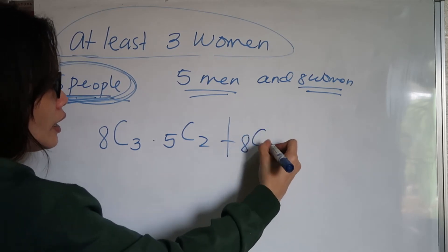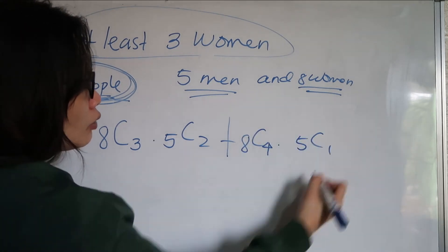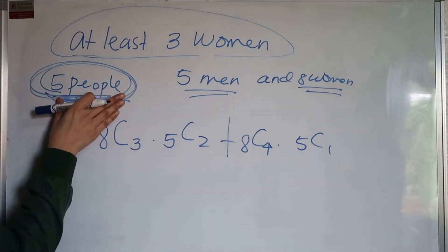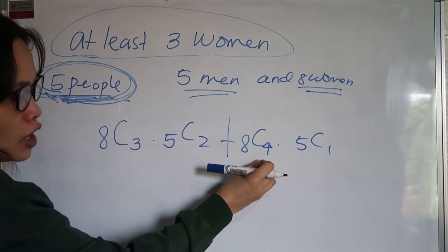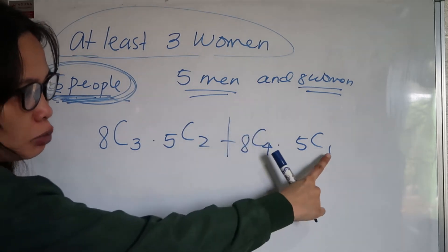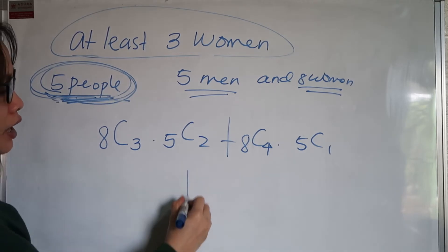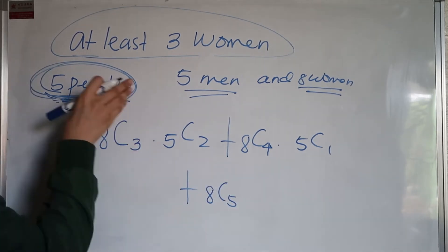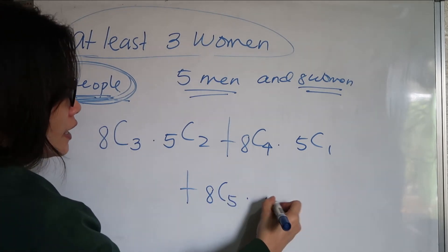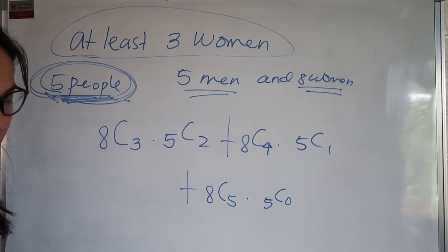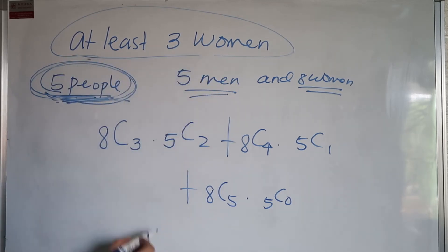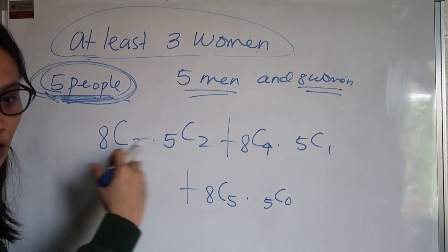Next case: C(8,4) multiplied by C(5,1). Why C(5,1)? Because in the committee of five people, if you select four women, you need one more man to complete the five. Plus, C(8,5) multiplied by C(5,0), meaning the whole committee is composed of women and there are no men in the committee. So you compute the combination for each case and then add everything together.